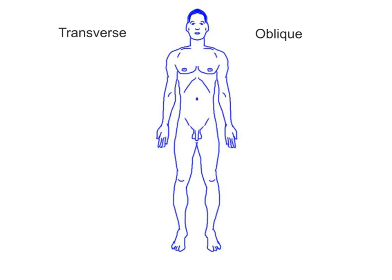An oblique plane is like a transverse plane, but it's tilted at an angle. It divides the body or organ in any diagonal direction.